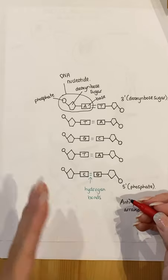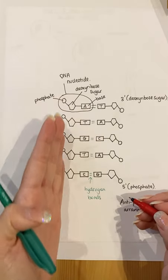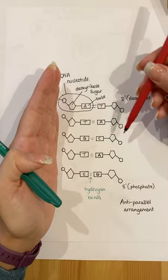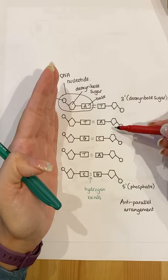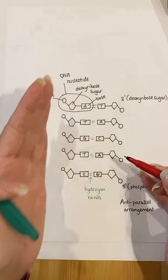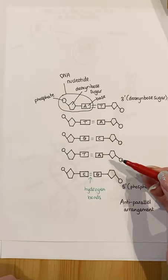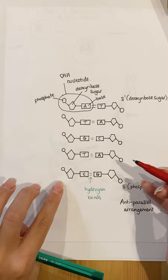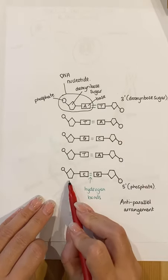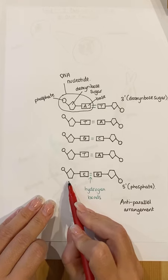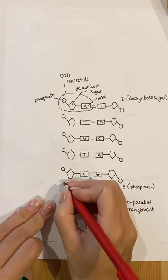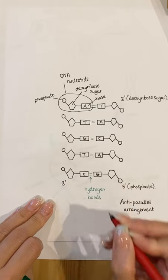The other strand that's complementary to it is running in a different direction. Notice the way that the pentagons of the deoxyribose sugar are pointing. These are pointing down, these are pointing up. If we look at the ends for the prime ends, the lowest point is a deoxyribose sugar, so this therefore is your three prime end.